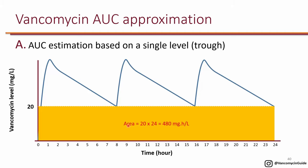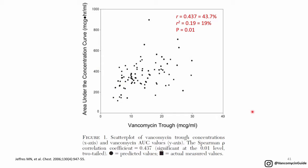Now let's look at the correlation between trough and AUC. The 2009 and 2011 guidelines said you can use trough as a surrogate for AUC, because we know AUC is the PKPD target for efficacy — AUC actually determines efficacy. Trough doesn't mean anything for efficacy; trough is only meaningful for safety. So those guidelines used trough as a surrogate for AUC, which is the actual parameter for efficacy, stating there is a significant correlation between trough and AUC.